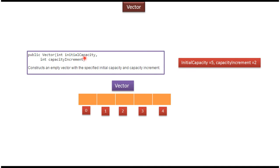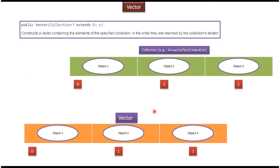And this is the third constructor which accepts initial capacity and capacity increment. This is used to construct an empty vector with the specified initial capacity and the capacity increment.